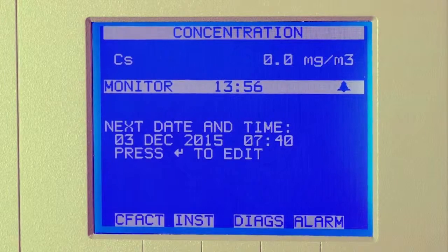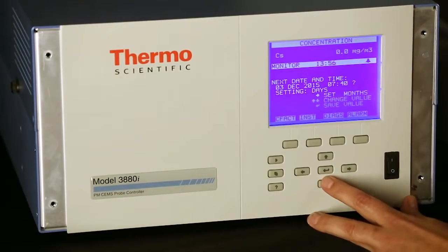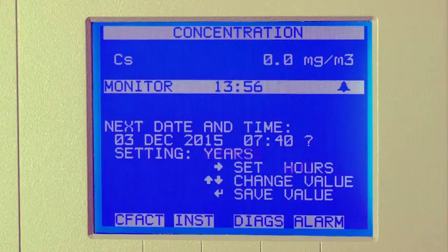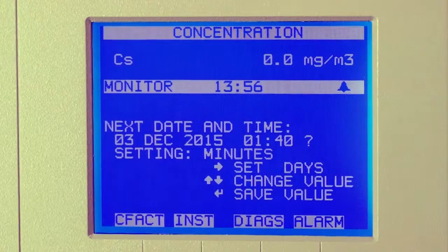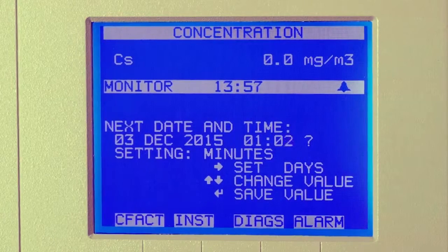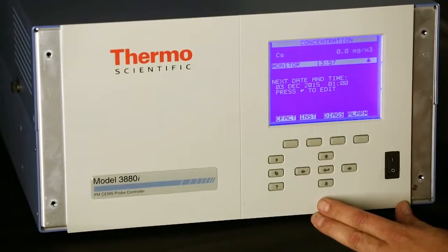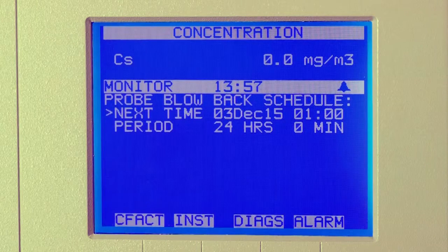Hit enter again to set the days, months, and years. Set the time to 01:00. Hit enter and back out. A 24-hour schedule is the optimum setup for the blowback schedule.